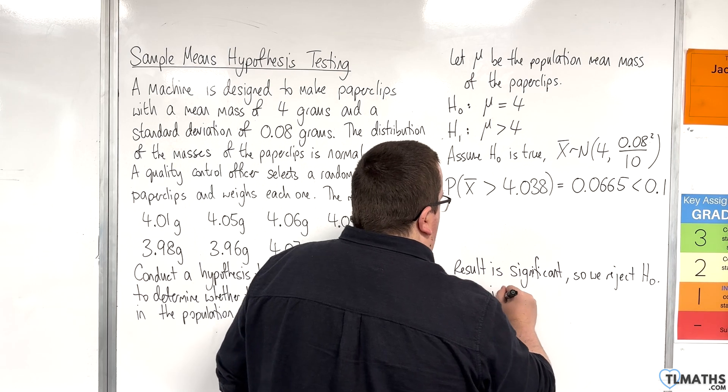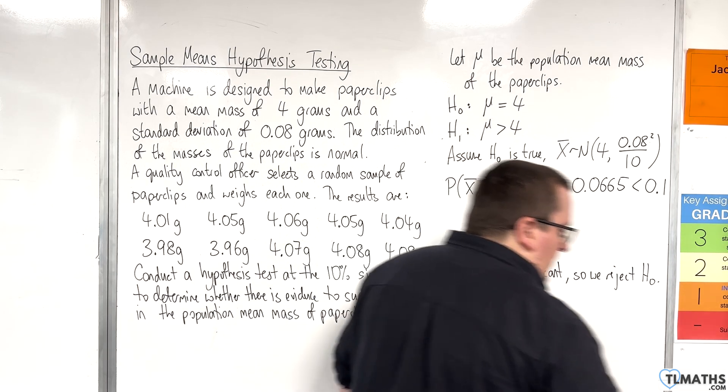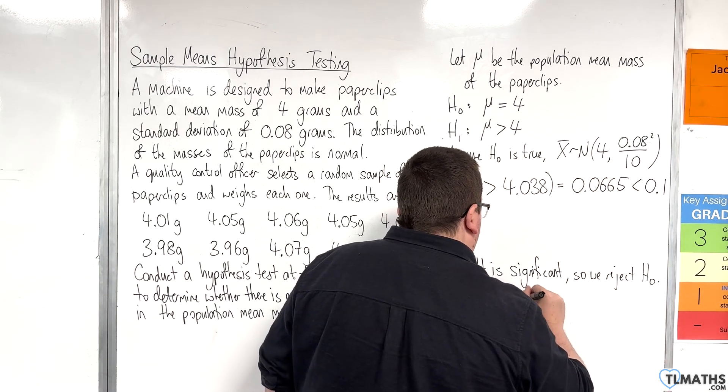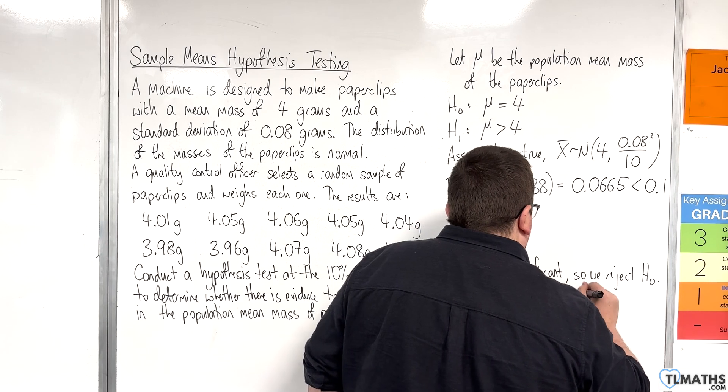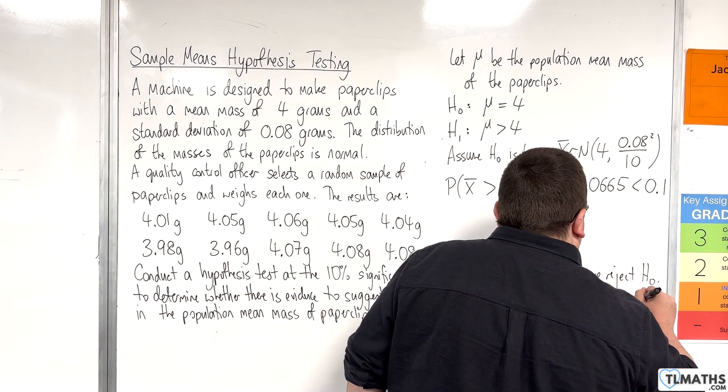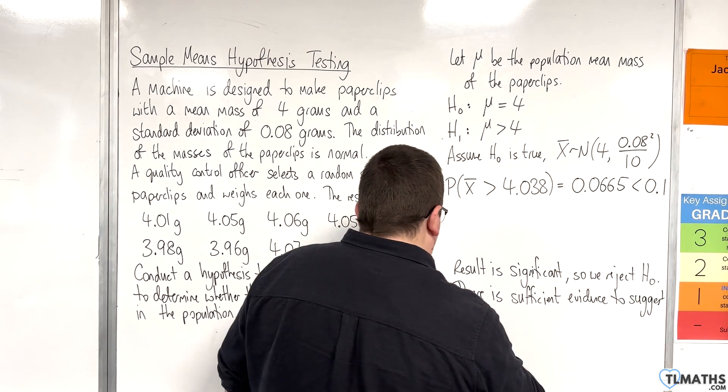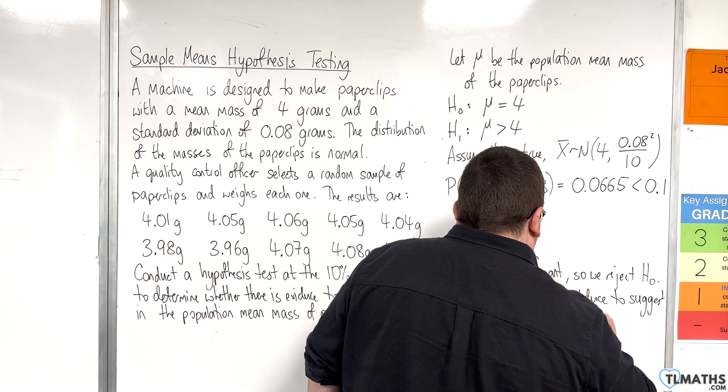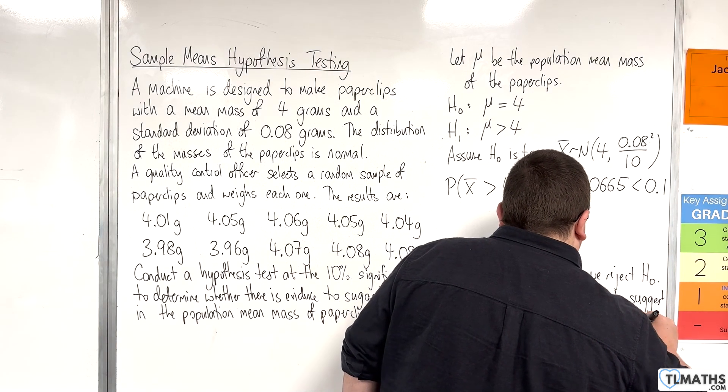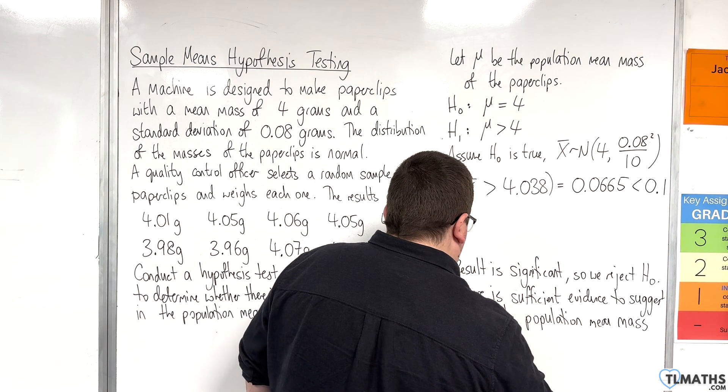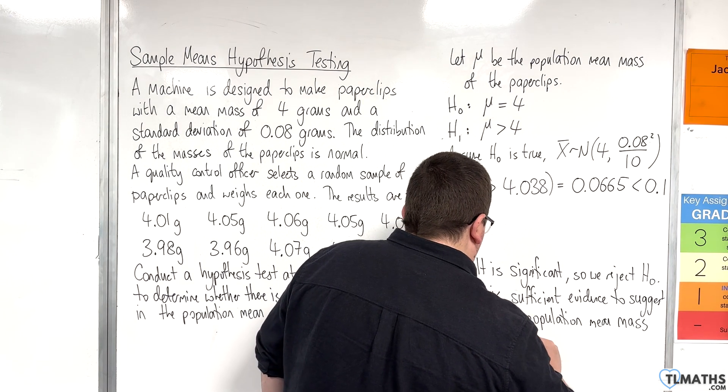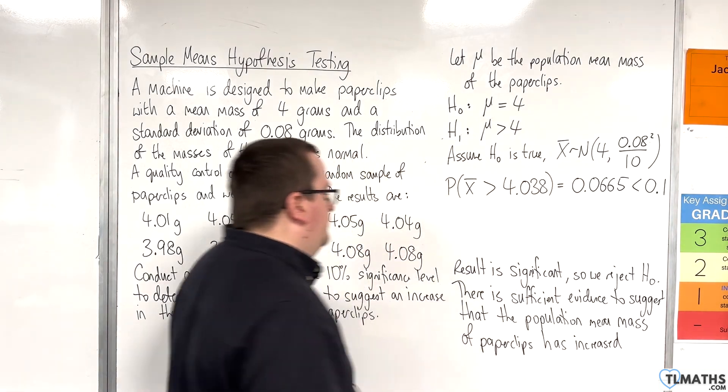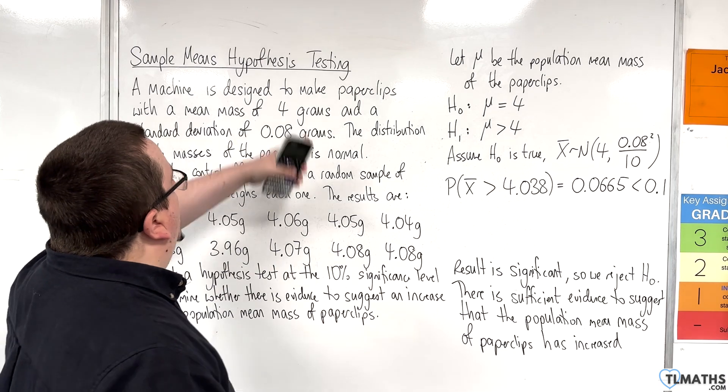There is sufficient evidence to suggest that the population mean mass of paperclips has increased past 4 grams.